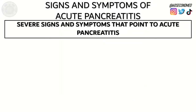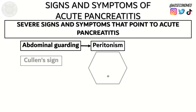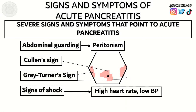There are other signs and symptoms that point to a more severe acute pancreatitis, such as abdominal guarding suggesting peritonism, Cullen's sign which is peri-umbilical bruising, or Gray-Turner's sign which is flank bruising — both indicating retroperitoneal bleeding — and signs of shock such as a high heart rate or low blood pressure.